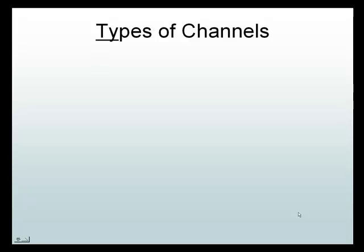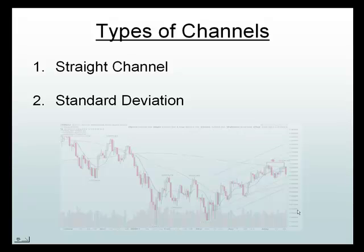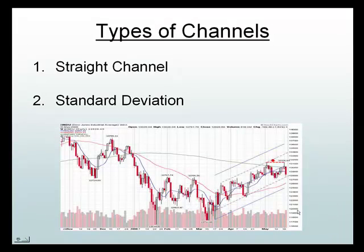There are basically two different types of channels. The most traditional one is straight lines, usually connecting highs and lows. Then we have what are considered standard deviations, and there are variations of that. As you can see here, we have a little bit of a combination of both.